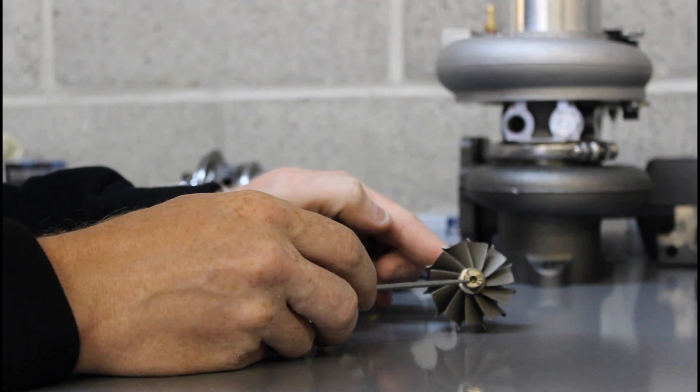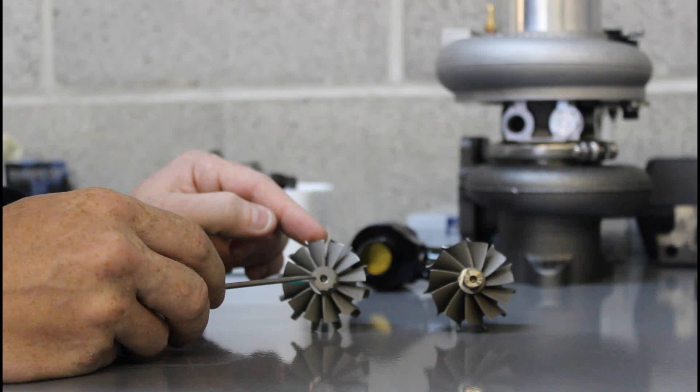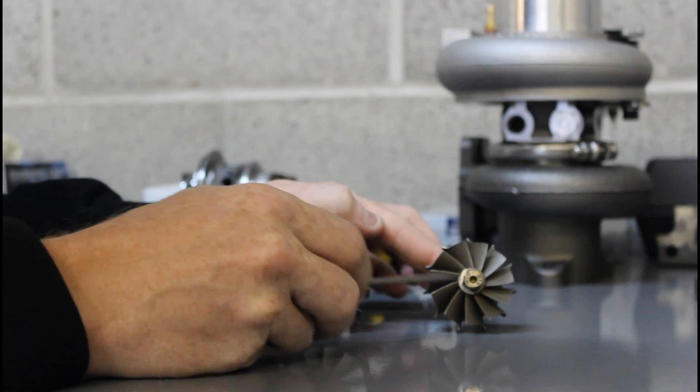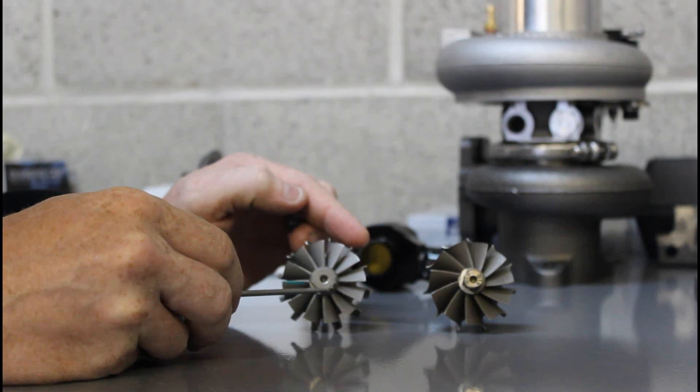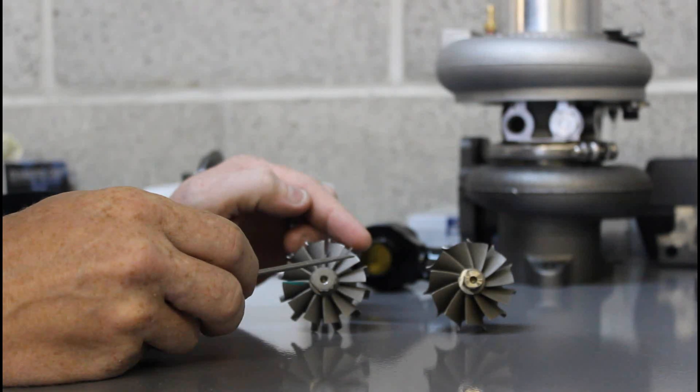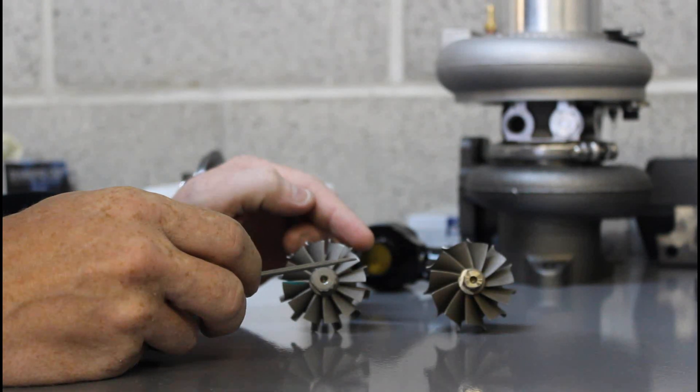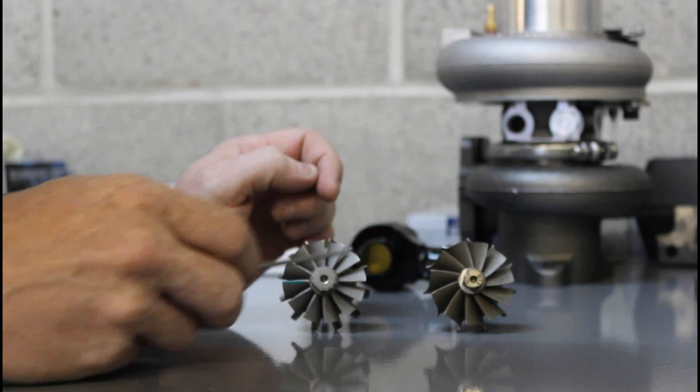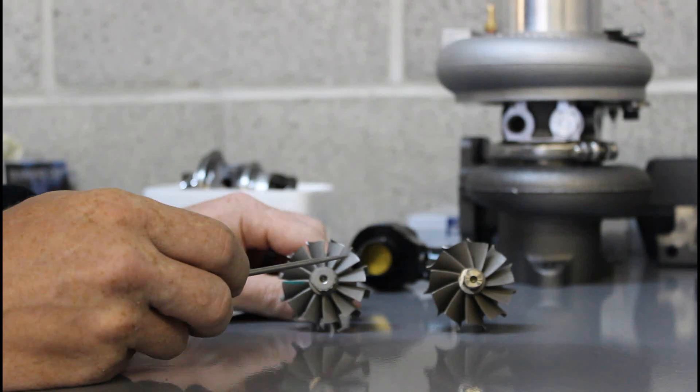First, we can notice that the snout on the turbo is quite a bit smaller, which helps reduce the total mass. It also has 11 blades instead of 12 blades to increase flow across the turbine, which is characteristic of the TD-04 where they like to boost the upper RPM ranges, and this helps to combat that.